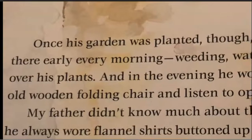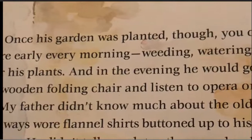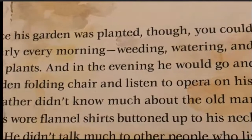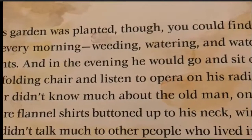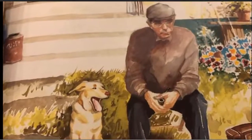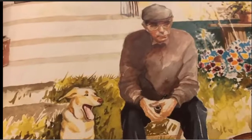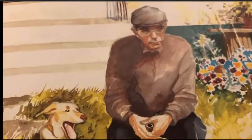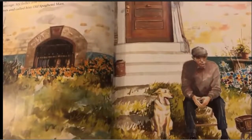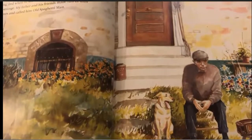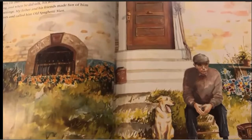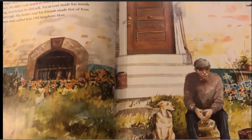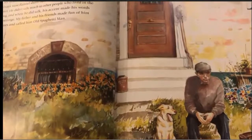Once his garden was planted, you could find him there early every morning, weeding, watering, and watching over his plants. And in the evening, he would go and sit on an old wooden folding chair and listen to opera on his radio. My father didn't know much about the old man, only that he always wore flannel shirts buttoned up to his neck, winter or summer. He didn't talk much to other people who lived in the building, and when he did talk, his accent made his words sound strange. My father and his friends made fun of him, sometimes called him Old Spaghetti Man.